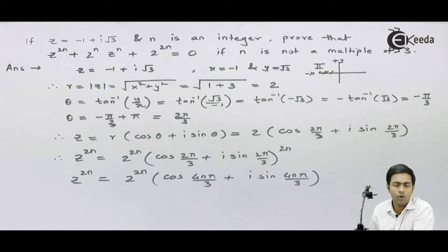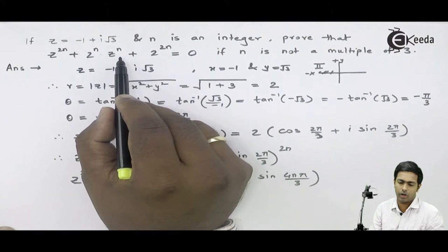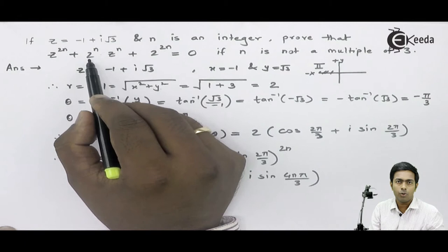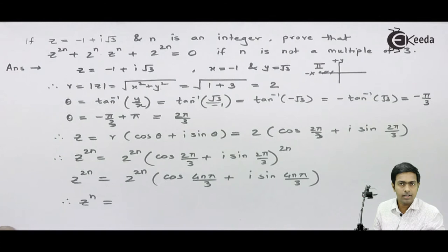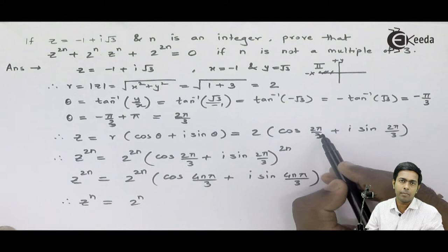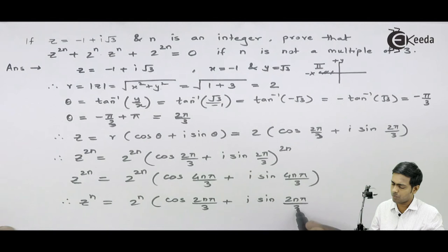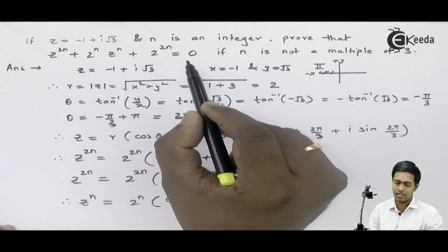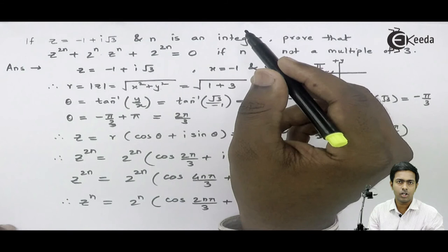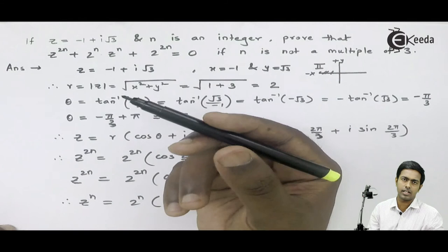Now we find the second term, which is 2 raised to n times z raised to n. Since 2 raised to n is a constant, we find z raised to n. Similarly, by De Moivre's theorem, z raised to n becomes 2 raised to n times (cos 2n pi by 3 plus i sine 2n pi by 3). The last term is 2 raised to 2n, which is a constant, so no further computation is needed. We now have the values of all three terms.